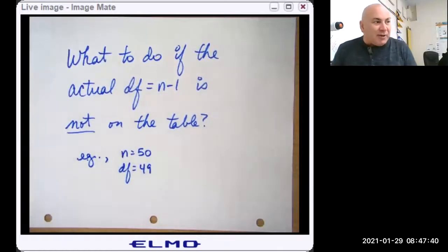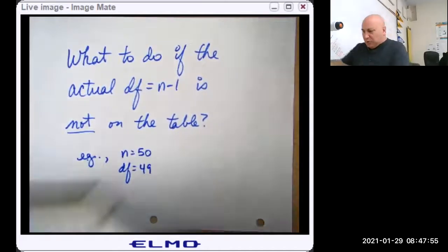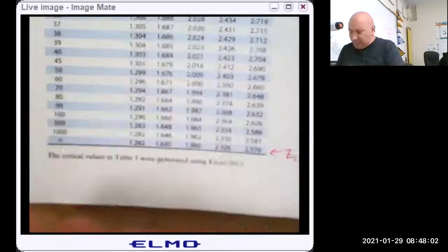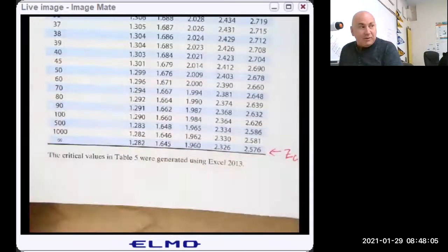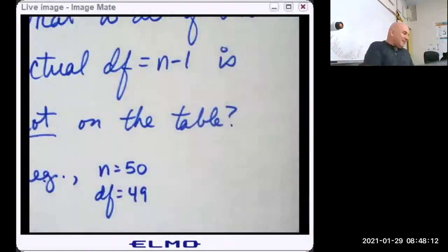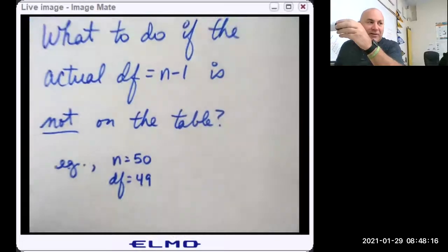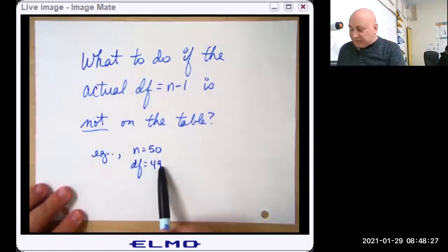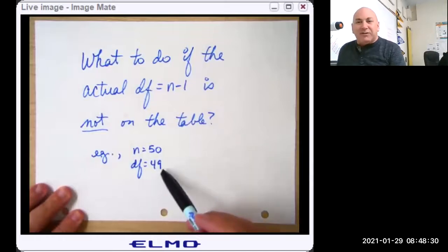So what do we do if our actual degrees of freedom is not on the table? For instance, go ahead and look at your table on page A18, and we notice that let's say we have a sample size of 50, which means our degrees of freedom is 49, and 49 degrees of freedom is not on the table. What do we do? You see down here at the bottom, we start skipping numbers, we go 40, 45, and 50. So clearly we have to round. What do we round to? In this case, remember I told you sometimes we always round up, like in our last lesson, where we rounded up on that sample size. This is a case where we always round down.